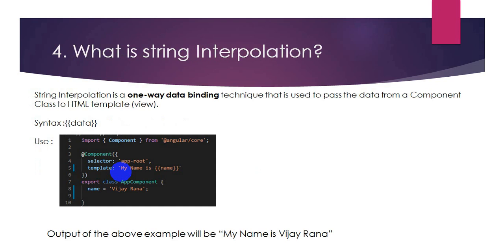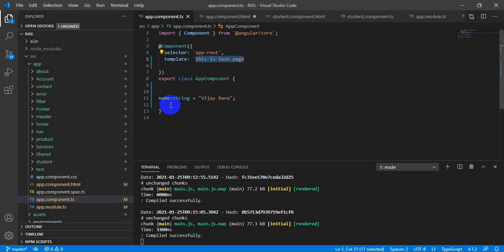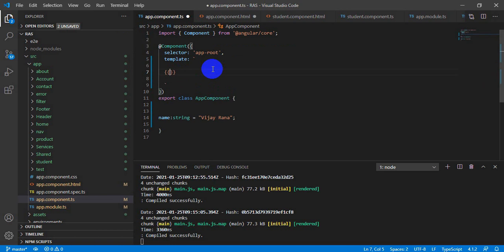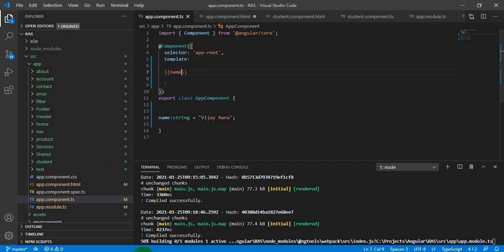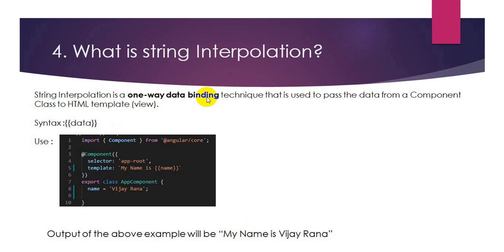Bindings tell you how to access class variable data in the HTML, or how to access the values of controls like text boxes and radio buttons in your component class. So the four types of bindings in Angular are string interpolation, property binding, event binding, and two-way data binding. String interpolation is a one-way data binding technique — if you have data in your class and want to access it in your HTML, you use interpolation. The syntax uses two curly braces at the start and two at the end, and you write the variable name between them. For example, if you have a variable named name, you enclose it within the curly braces to access it in your HTML.